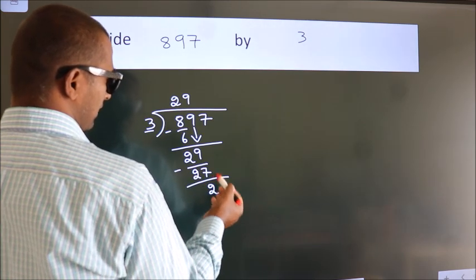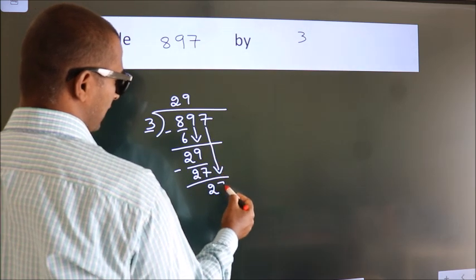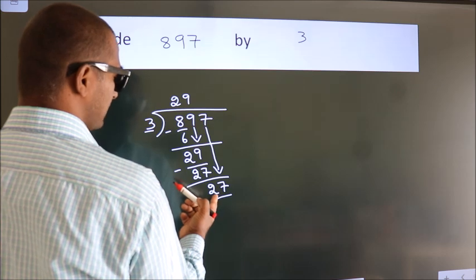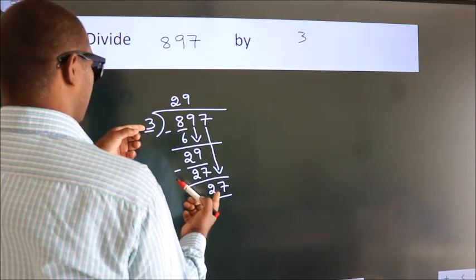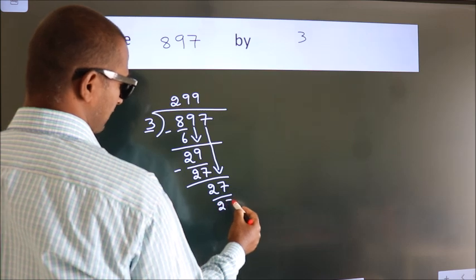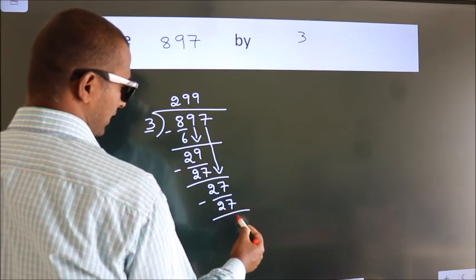After this, bring down the beside number. So, 7 down. So, 27. When do we get 27? In 3 table. 3 9s, 27. Now, we subtract. We get 0.